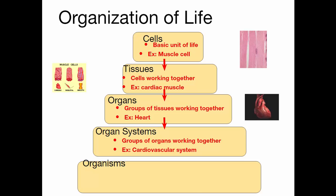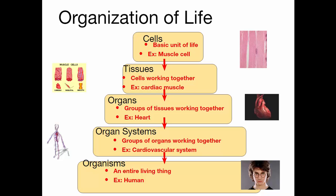You're seeing this pattern: cells work together to form tissues, tissues work together to form organs, organs work together to form organ systems. The simplest living things are only cells; the most complex have all of these parts. An organism is one entire living thing — in some cases it's several organ systems working together, in other cases just a single cell.